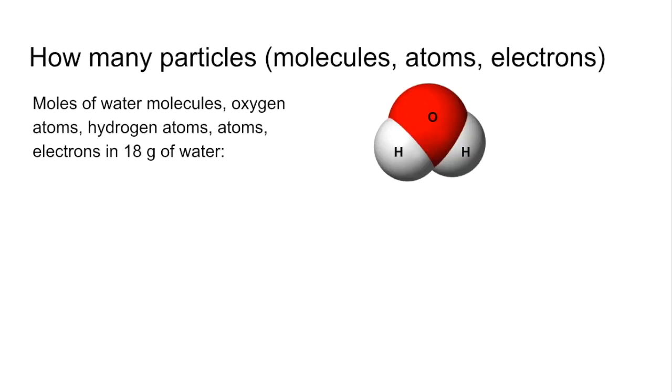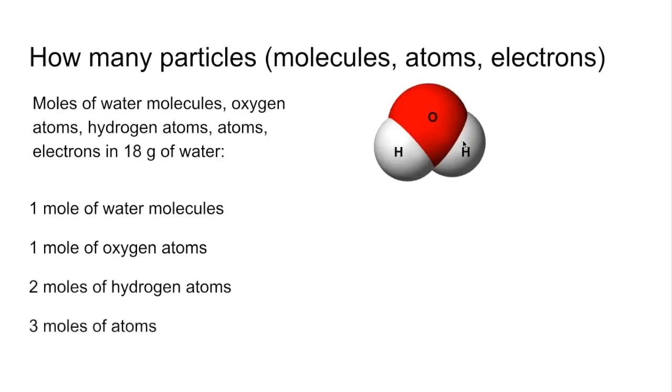So how many moles of water molecules, oxygen atoms, hydrogen atoms, atoms in total and electrons are there in 18 grams of water. Well obviously 18 grams of water is a mole of water. So you'd have one mole of water molecules. You'd have one mole of oxygen atoms because each molecule contains one oxygen atom. You'd have two moles of hydrogen atoms because each water molecule has two hydrogen atoms. You'd have three moles of atoms.